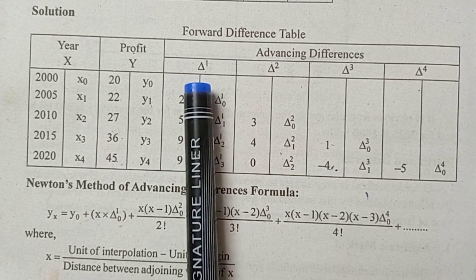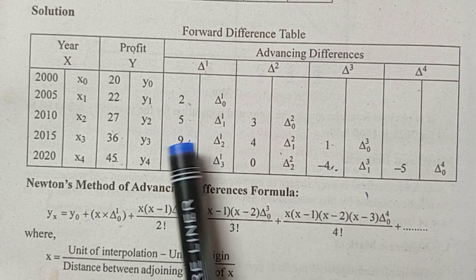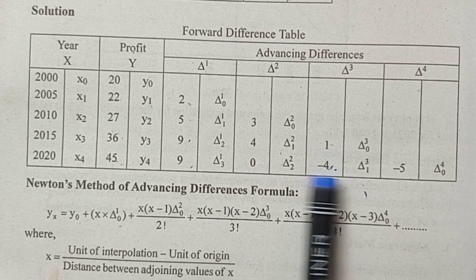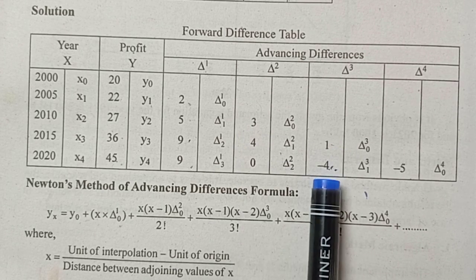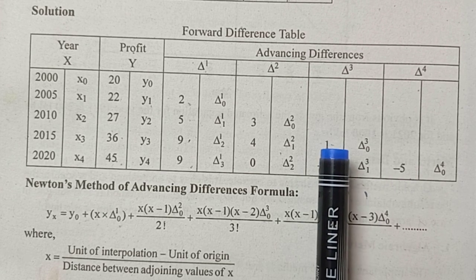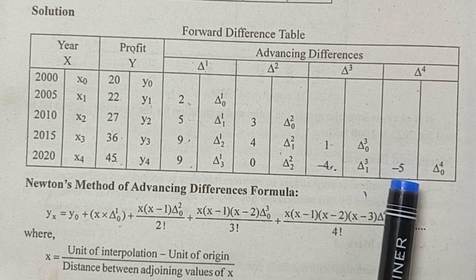Then, next one, 5 minus 2, 3, 9 minus 5, 4, 9 minus 9, 0. Next one, 4 minus 3, 1, 0 minus 4, minus 4. Next one, minus 4 minus 1, that is minus 5.